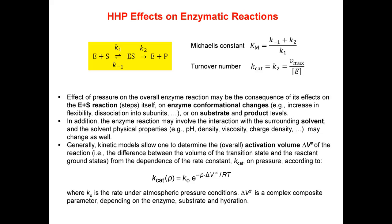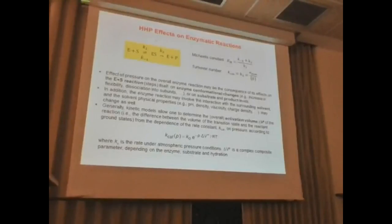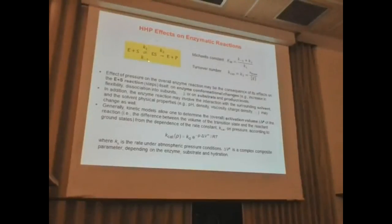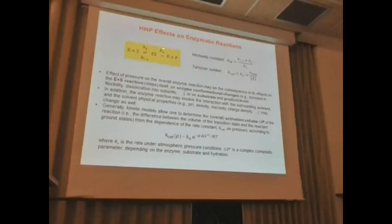Let me give a biological example: an enzyme reaction. A protein enzyme and a substrate form an enzyme-substrate (ES) complex. In Michaelis-Menten kinetics, this is assumed to be an equilibrium with forward rate k₁ and backward rate k₋₁. The ES complex then undergoes the catalytic step with rate constant k₂, also called k_cat or the turnover number, forming the product. This k_cat is controlled by the activation volume of that process.